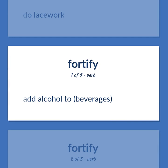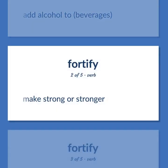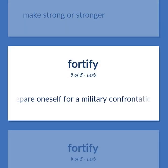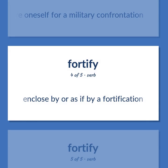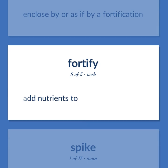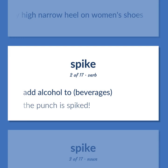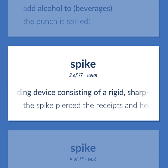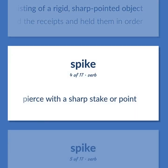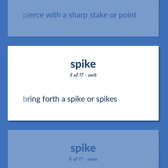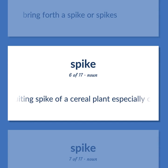Fortify: to add alcohol to beverages. To make strong or stronger. To prepare oneself for a military confrontation. To enclose by or as if by a fortification. To add nutrients to. Spike: a very high narrow heel on women's shoes. To add alcohol to beverages. Example: the punch is spiked. Any holding device consisting of a rigid, sharp pointed object. Example: the spike pierced the receipts and held them in order. To pierce with a sharp stake or point. To bring forth a spike or spikes. Fruiting spike of a cereal plant, especially corn.